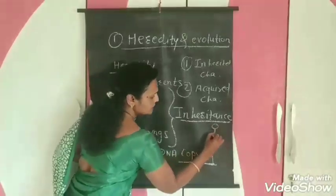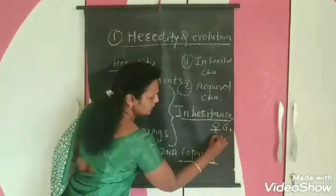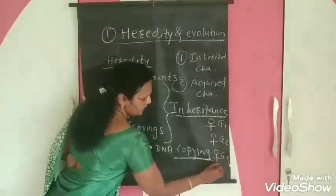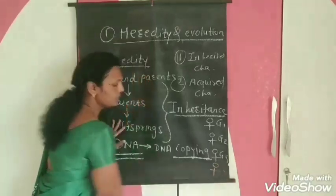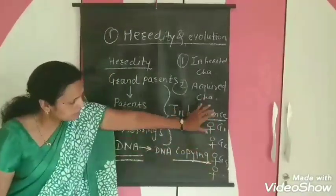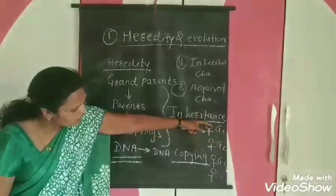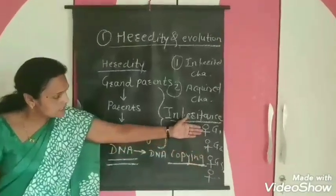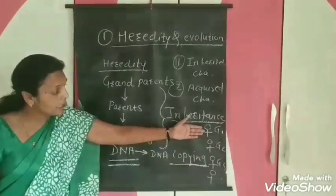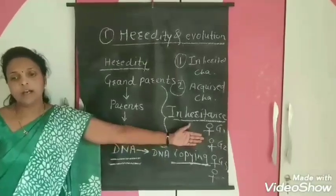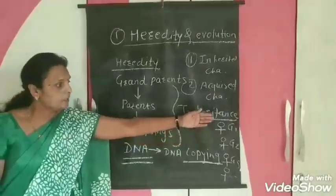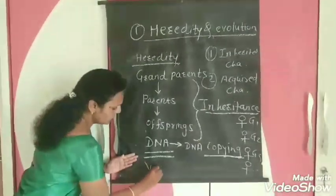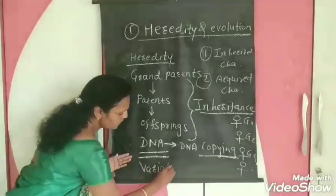For example, this is the first generation G1, then G2, G3, G4 — continuous generations occur. During copying from first to second, second to third, third to fourth generation, some variations and errors arise while copying the DNA. Due to this, variations occur, and this term is known as variations.